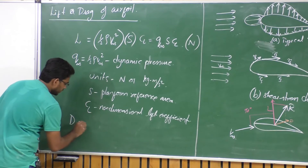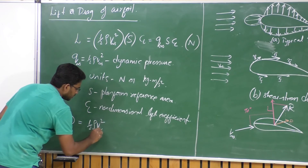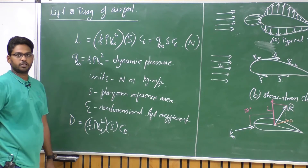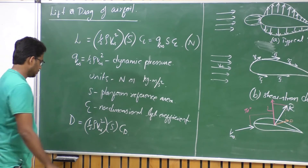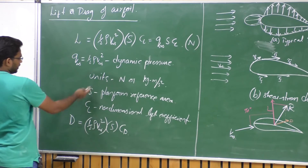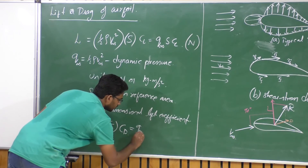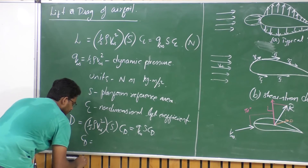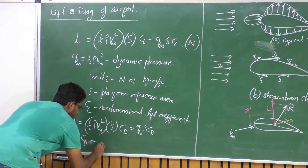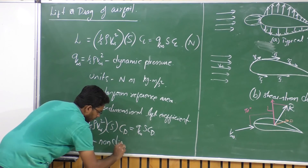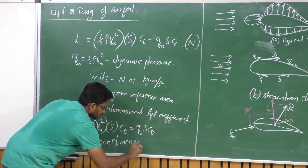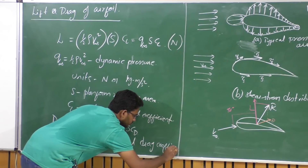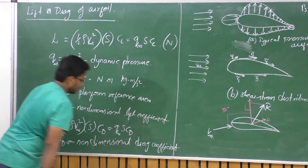Similarly, drag is defined as D = Q_infinity × S × CD, where CD is the non-dimensional drag coefficient. We will see what CL and CD depend upon as we progress.